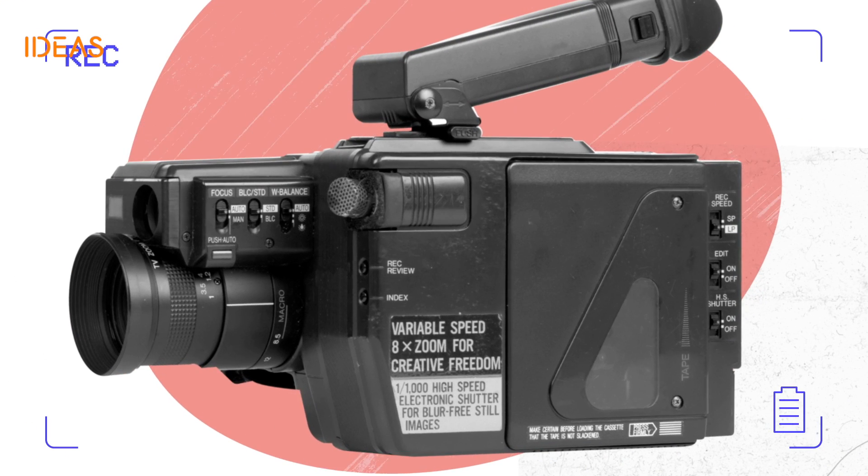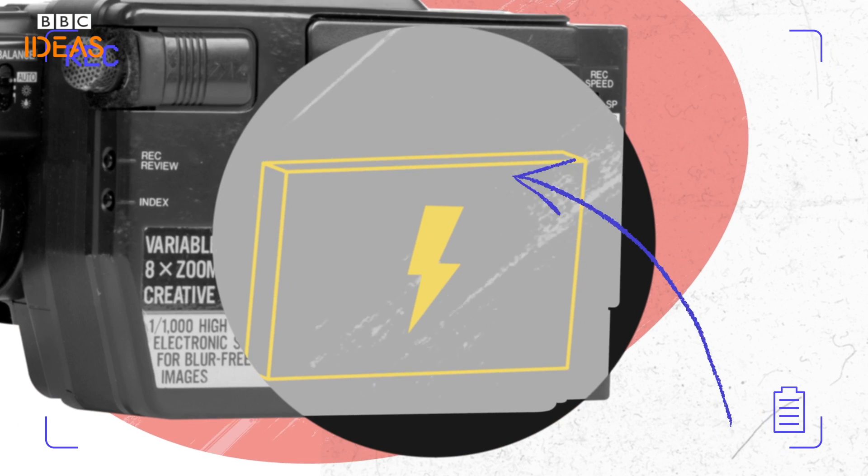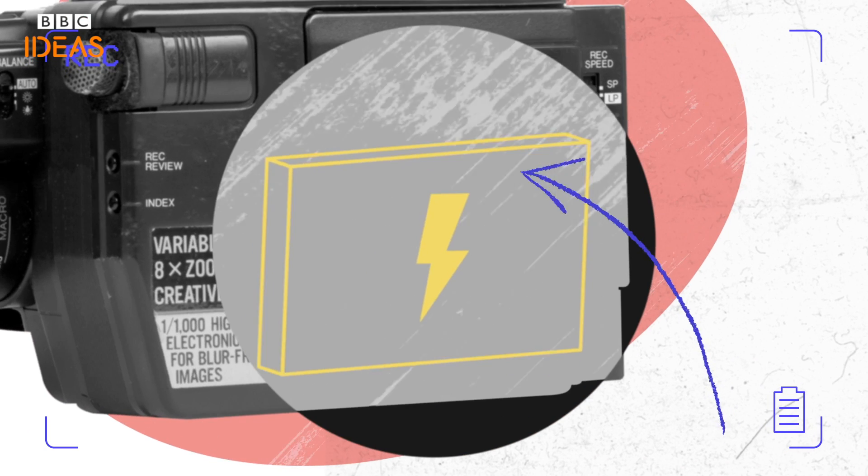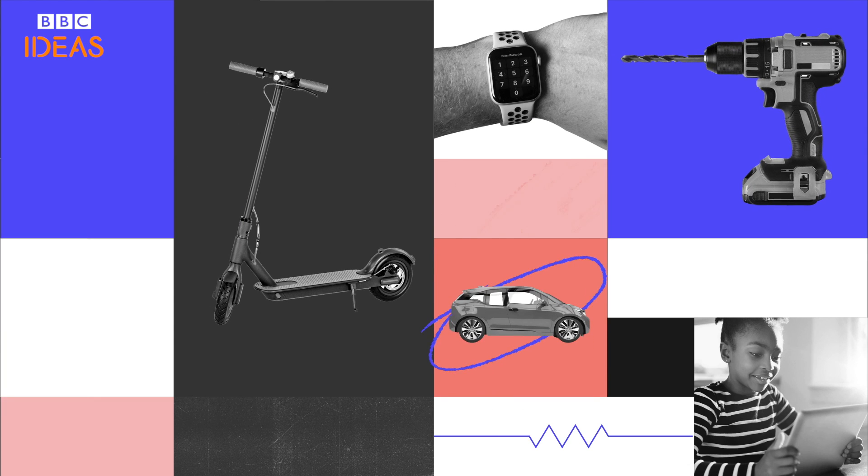The camera was revolutionary for the time but the real game-changer was the lightweight powerful and rechargeable battery inside. Soon lithium-ion batteries were in everything from power tools to toothbrushes.